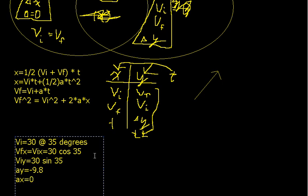So look how much data they gave us — three pieces of information on the x side, and two pieces on the y side. They might ask: how far does it travel before it hits the ground? What you do is use the three pieces you have to solve for time, because you always want to solve for time first and then work things out.